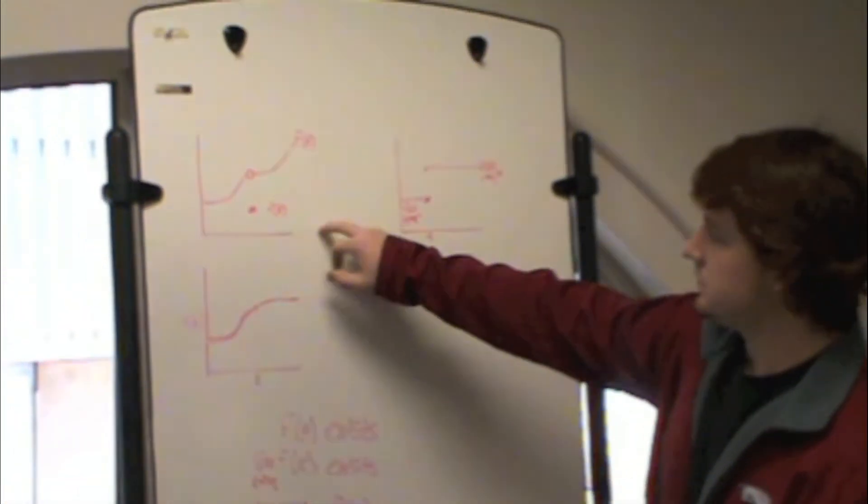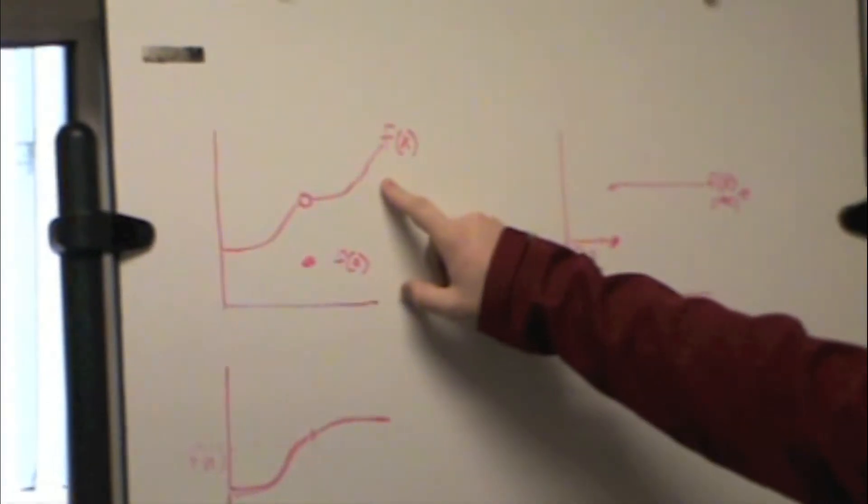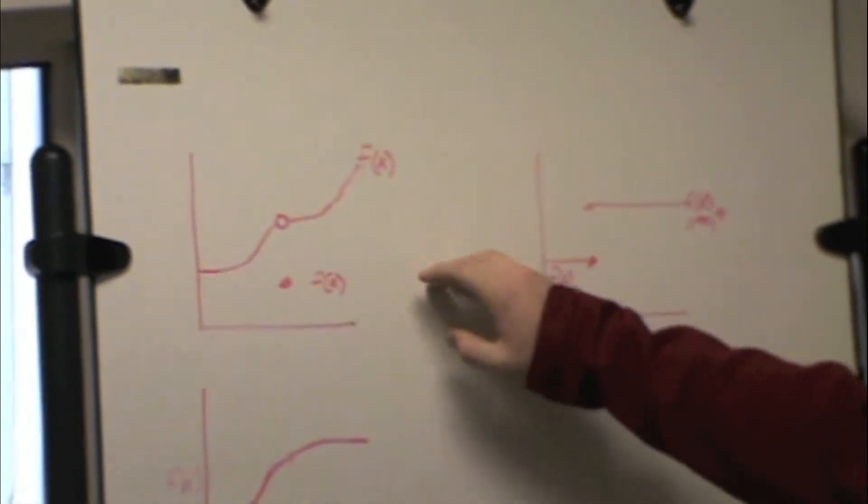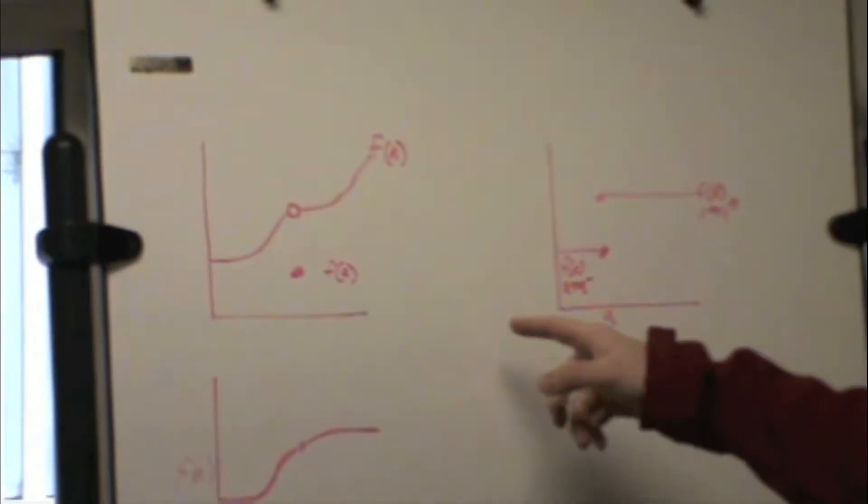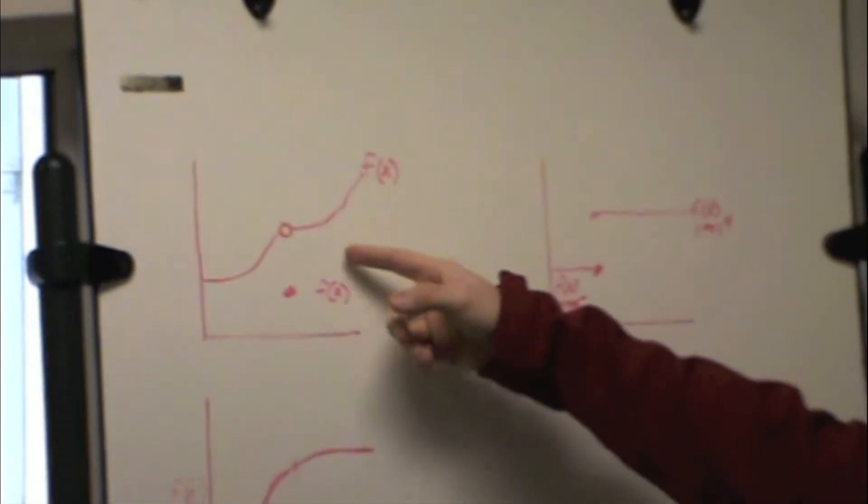For this one, you have a limit and the limit's here, but as you can see, f of a is here. So that one is discontinuous because f of a does not equal f of x.